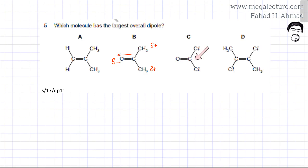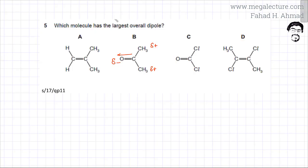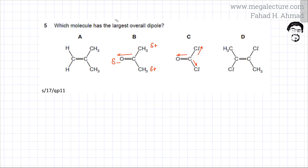Let's check out option C as well. Option C has oxygen atoms and chlorine atoms. Looking at the periodic table, oxygen and chlorine are both on the extreme right and top of the periodic table, so they are both equally electronegative with almost similar electronegativity. Since all three surrounding atoms are equally electronegative, each is trying to pull electrons toward itself, but the forces of attraction are going to cancel out. So there is not going to be any overall dipole in option C.